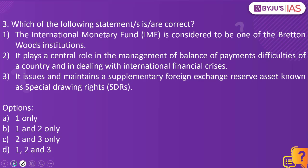Now let's look into the next practice question. Which of the following statements is correct? The International Monetary Fund is considered to be one of the Bretton Woods institutions. It plays a central role in the management of balance of payments difficulties of a country and in dealing with international financial crises. It issues and maintains a supplementary foreign exchange reserve asset known as Special Drawing Rights. Which of the statements given here are correct? The answer to this is 1, 2 and 3.